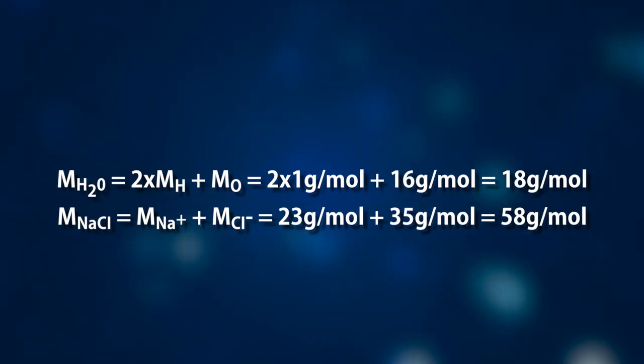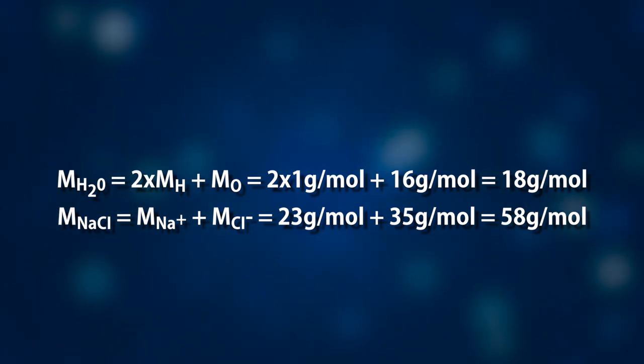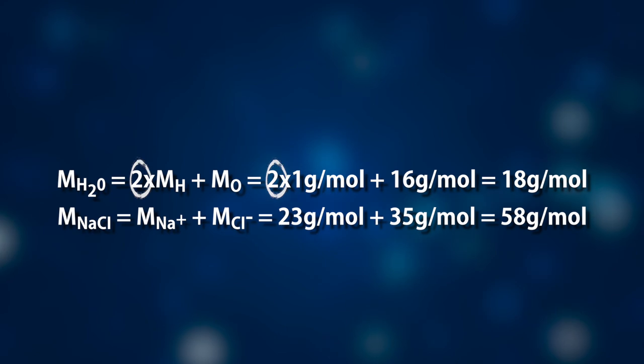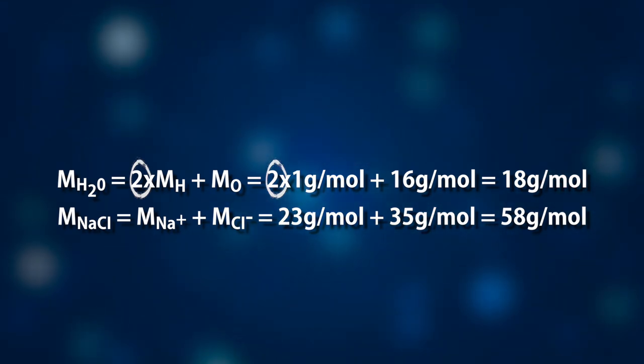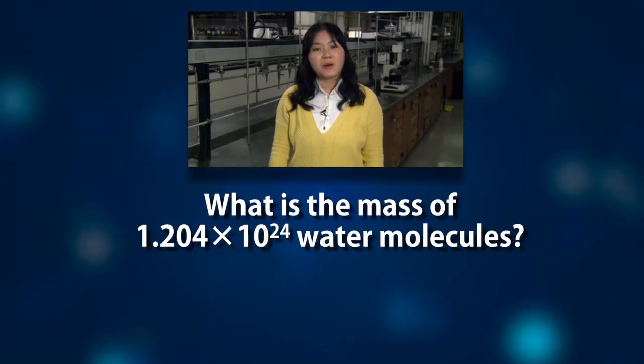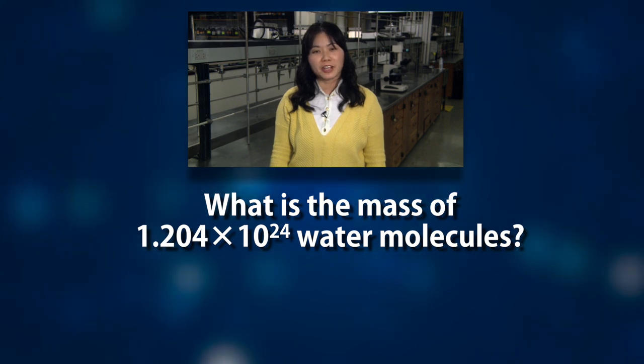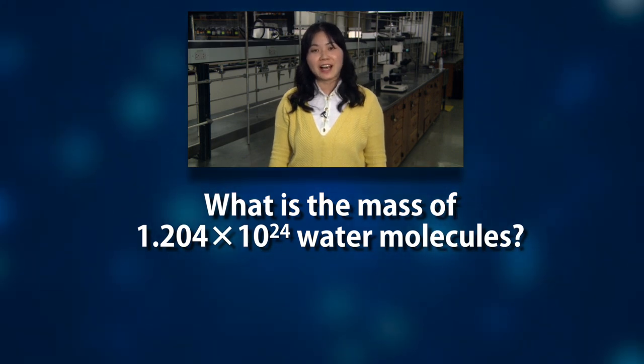It's easy — just simply add up the molar mass of all the atoms or ions in the molecules or ionic compounds, remembering that there might be more than one atom of each type per molecule. Now let's see how mole links the invisible micro world to the observable macro world. Think about this question: what is the mass of 1.204 times 10 to the 24th water molecules? Have a try and I will be right back.